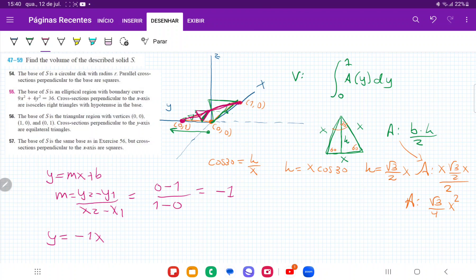Well, the y-intercept is just (0,1), where it crosses there, so plus 1. And therefore, if we move this around, we have that x is equal to minus y plus 1.